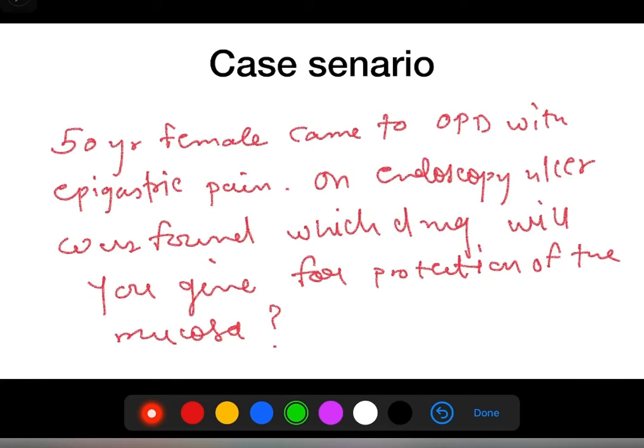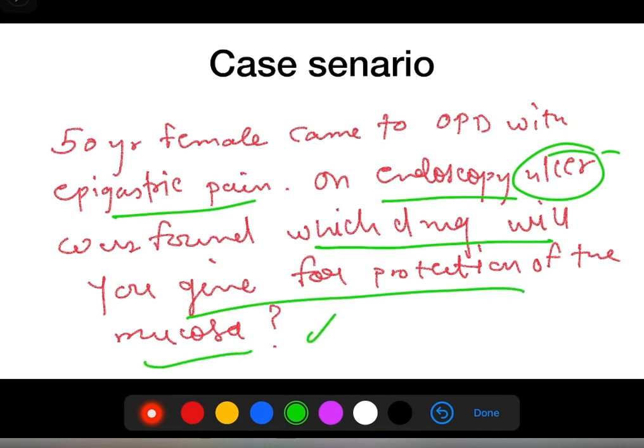Case scenario: 50 year old female came to OPD with epigastric pain. On endoscopy, an ulcer was found. Which drug will you give for protection of the mucosa?